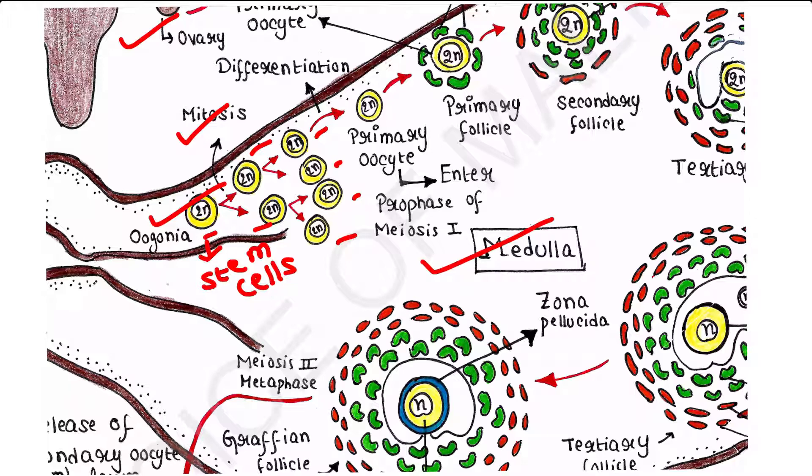Remember one thing: no more oogonia are formed after birth. No more oogonia will be formed after birth. Before birth, only in the embryonic stages, this thing occurs.